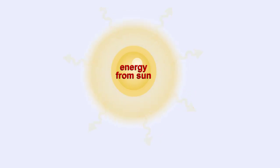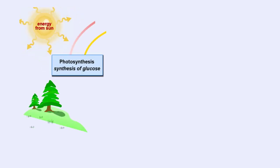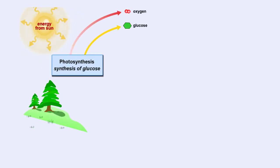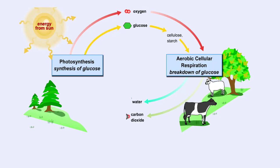The energy on Earth comes from a star, the Sun. Light must travel 160 million kilometers to reach Earth, where plants capture this light energy and convert it to chemical energy in the form of sugars. This biochemical process is called photosynthesis.